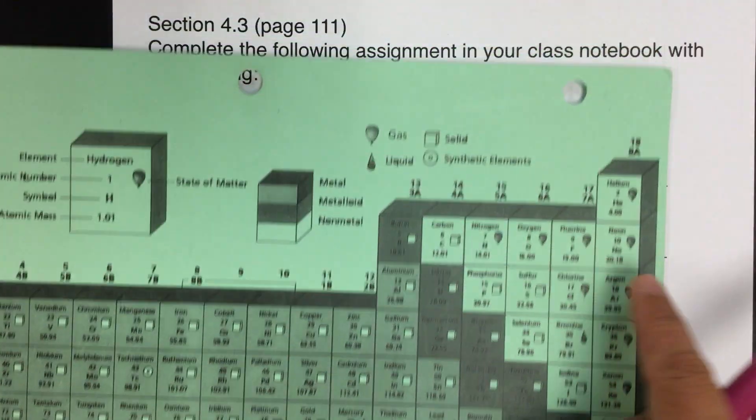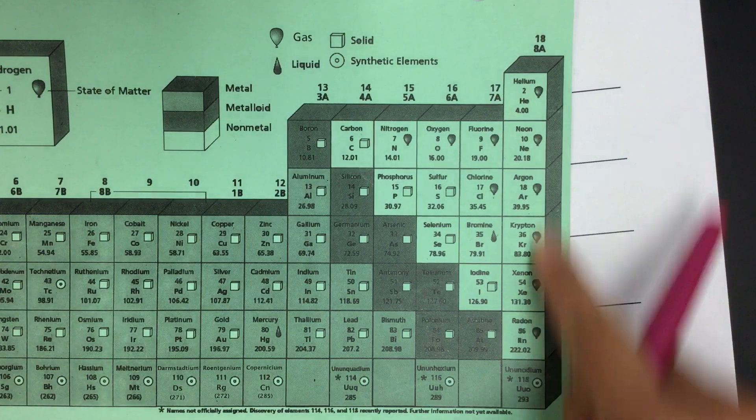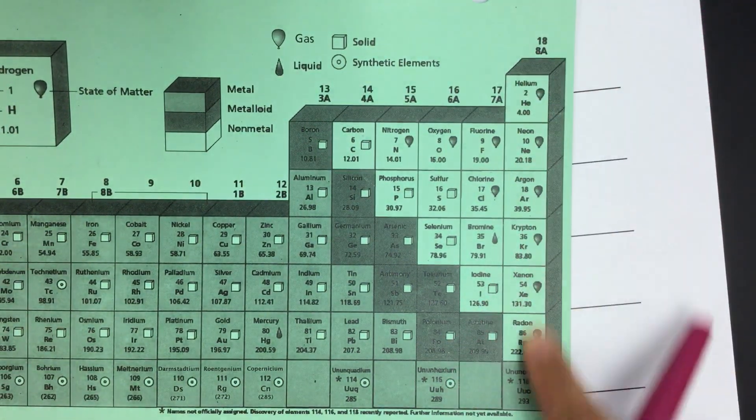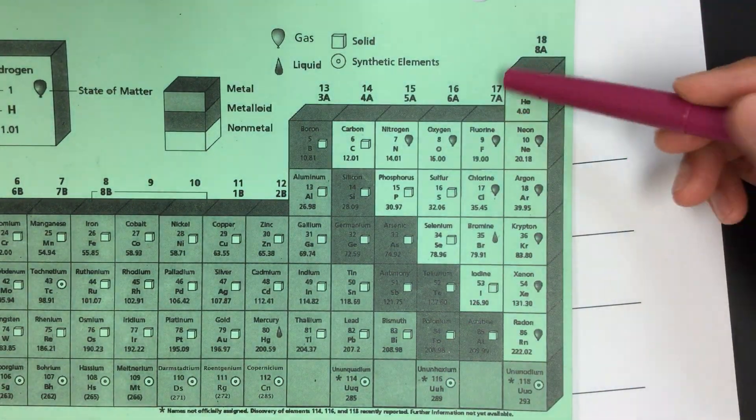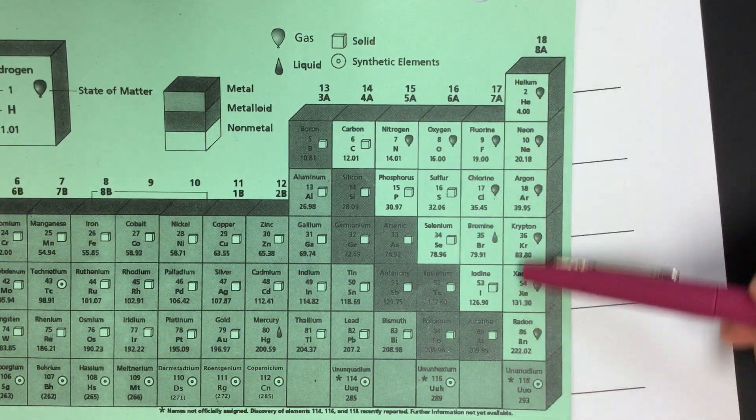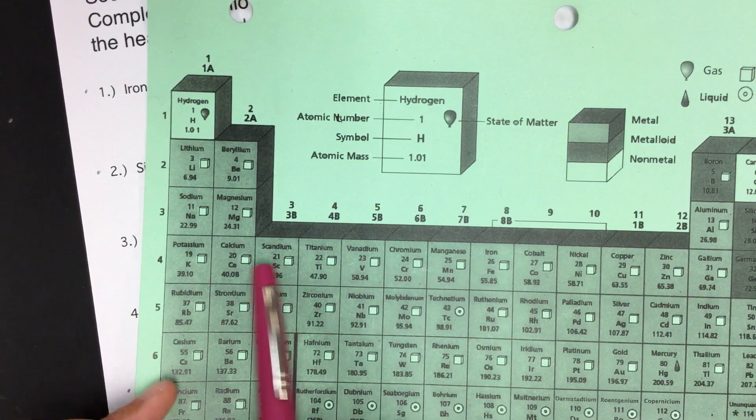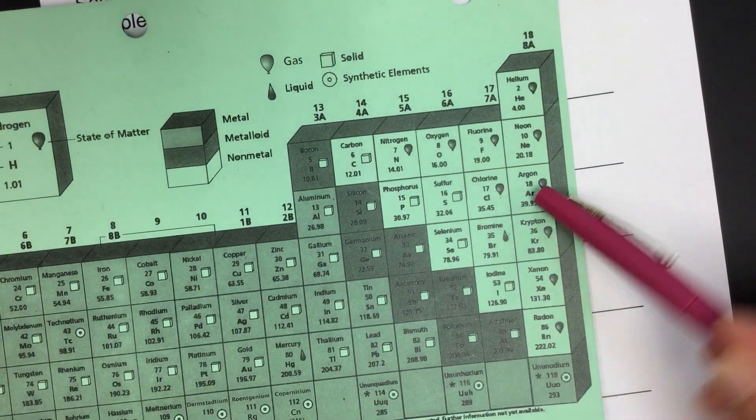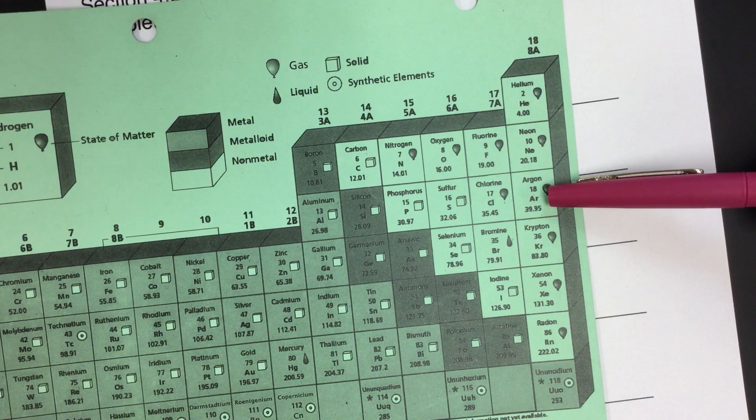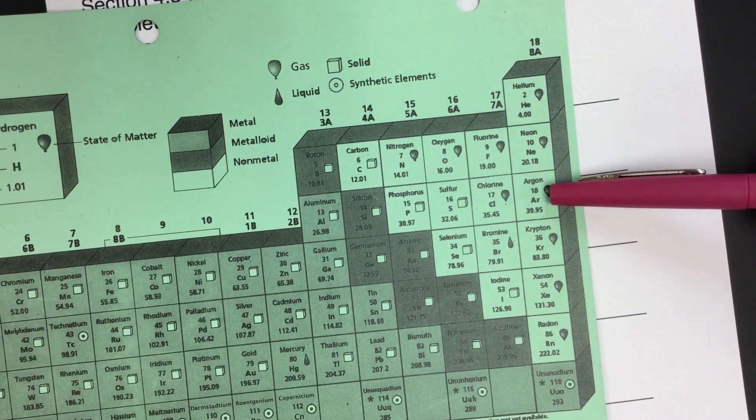So we go backwards. Remember that the noble gases are all of these in column number 8A. This is the family group or family, the noble gases. So if we go backwards from iron all the way, and then we hit argon. So that is the previous noble gas, argon.